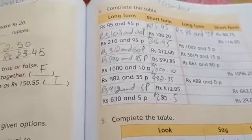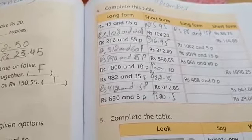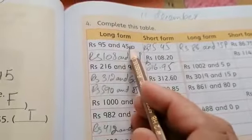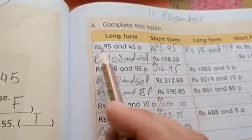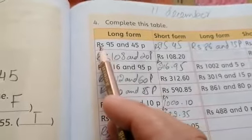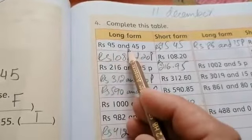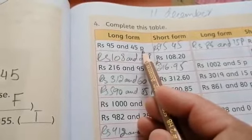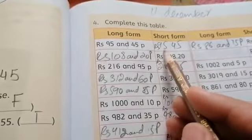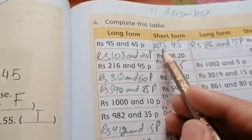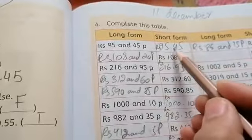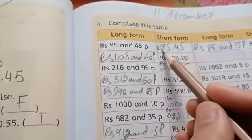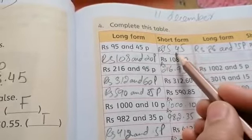Question number 4. Complete this table. Hold your pencils. Long form. Short form. The long form is written Rupees 95 and 45 paisa. How we will write in short form? Rs 95.45. It is rupees and after point it is paisa. Now they have given a short form. We will write its long form.